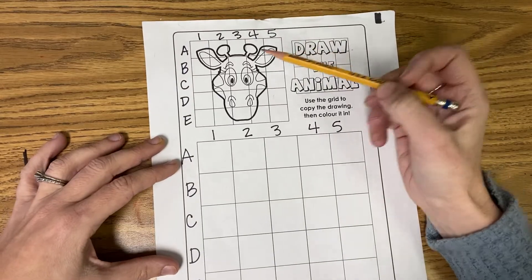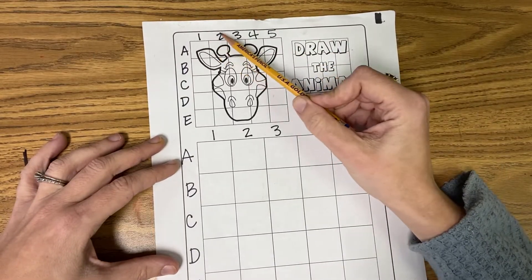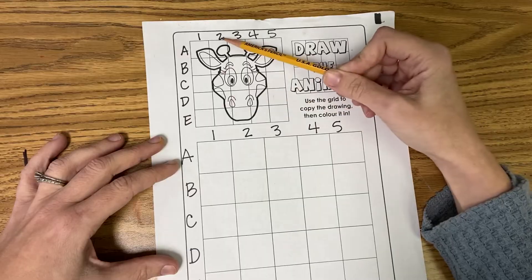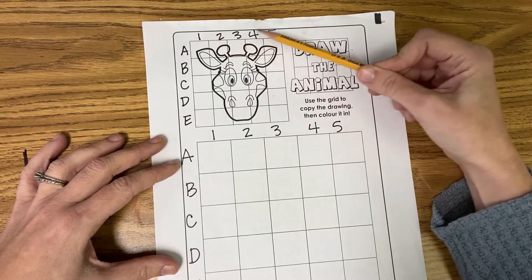So I went ahead at the top and I numbered one through five, your columns, right? Your columns are numbers. One, two, three, four, five.